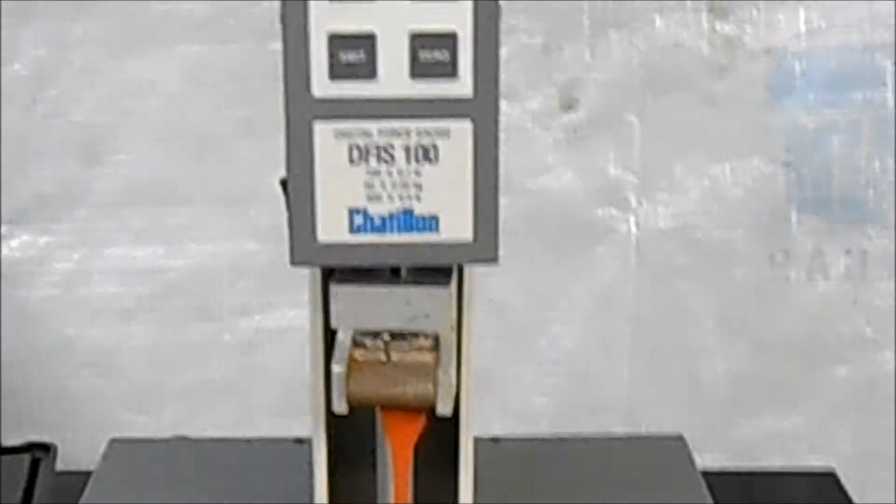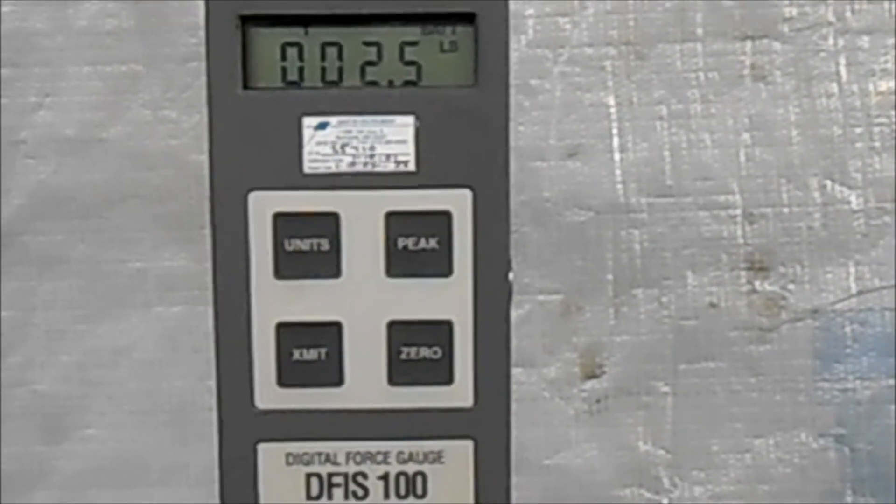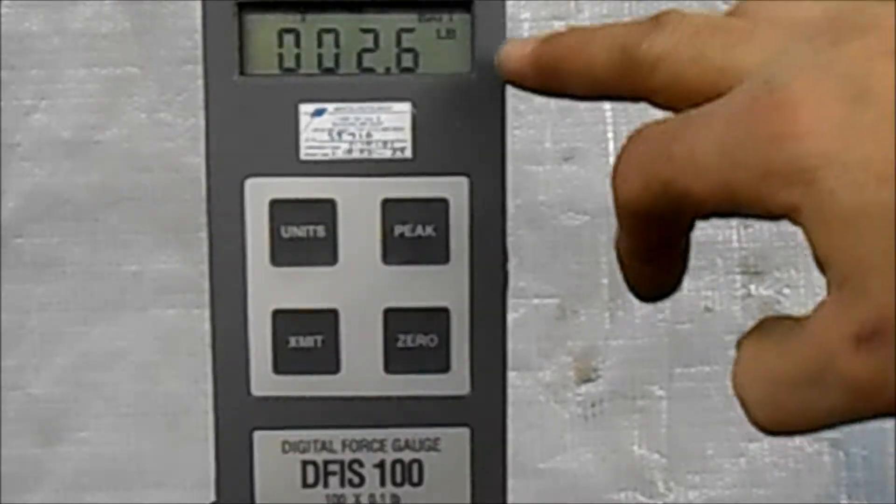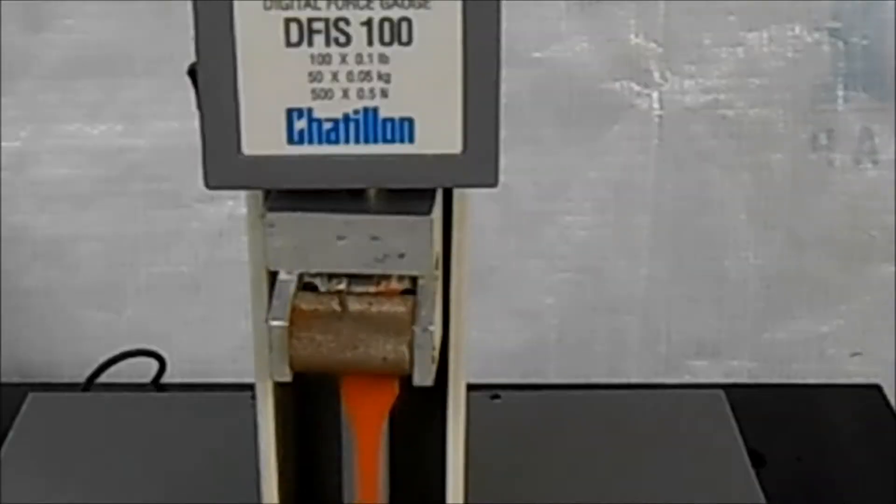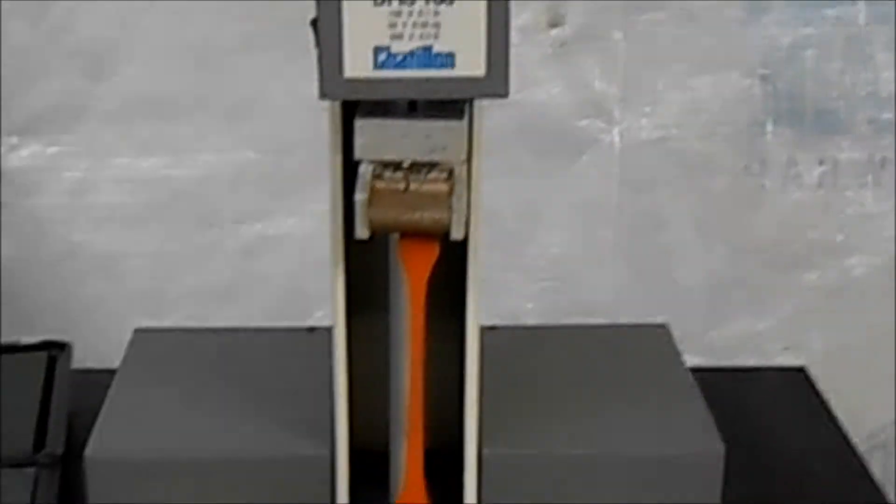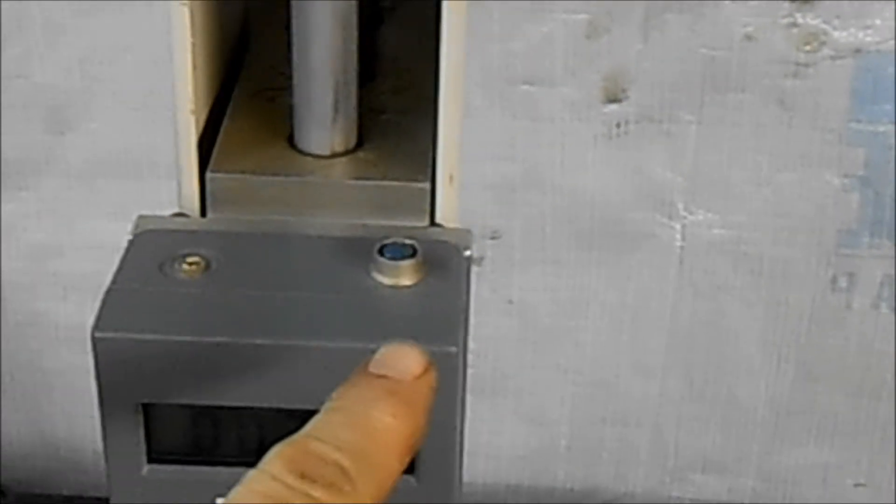And let's take a look here at the digital force gauge. The DFIS-100 is the model number. We can see that this is climbing as the sample is stretching. And this has a 12 pin connector right here that allows computer interface.